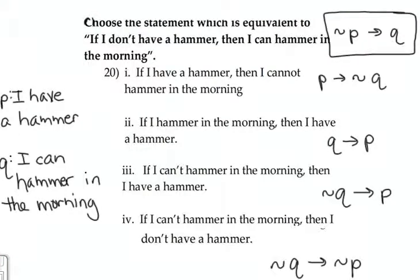For number 20, we're asked to choose the statement that is equivalent to, if I don't have a hammer, then I can hammer in the morning.